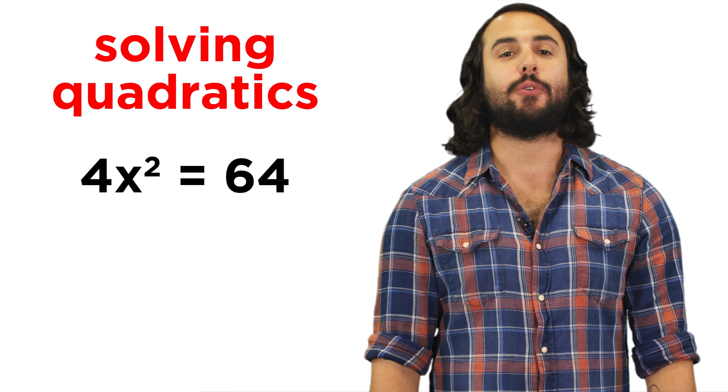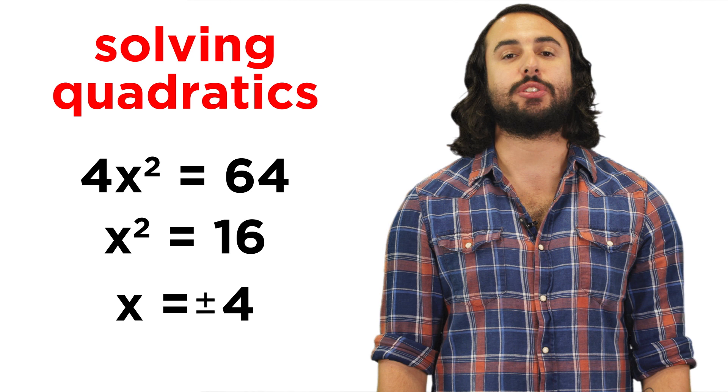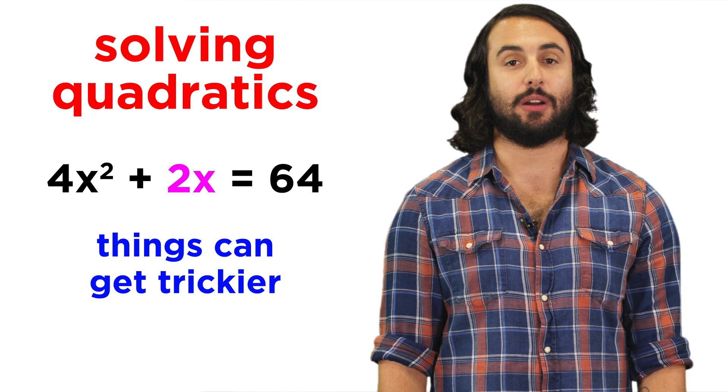For several tutorials, we have been learning how to solve quadratics. Some are easy. Four x squared equals sixty-four requires just a few steps. Working from the outside in, we divide both sides by four, take the square root, and x equals plus or minus four.